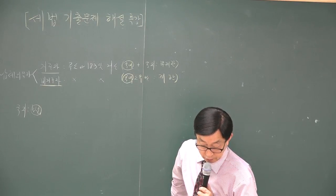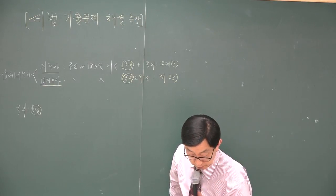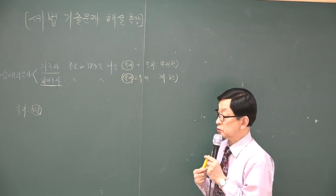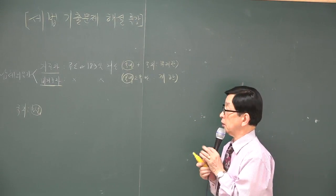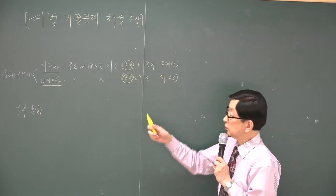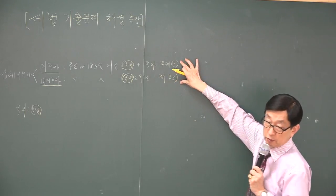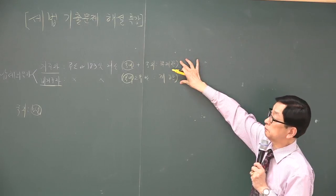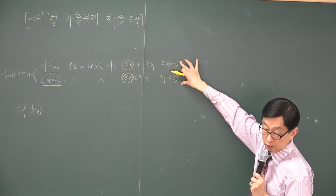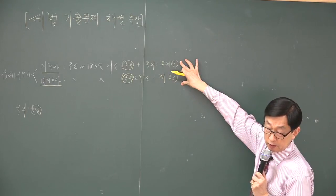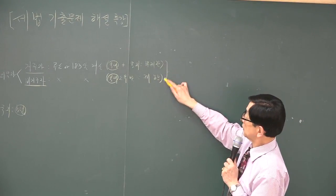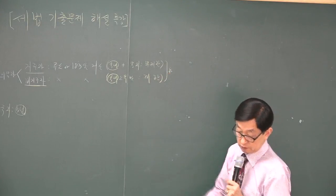1주택을 보유한 1세대가 2년 내에 주택을 외국에 나갔다가 2년 내에 양도만 되죠. 이 납세의무자 내용만 알고 있으면 답 찾는 건 크게 문제가 안 됩니다. 그동안 기출문제 중에서 선별해서 어렵게 나오는 부분들만 발췌해 놓은 거니까, 이 내용만 숙지하면 되겠습니다.